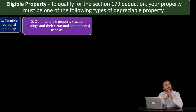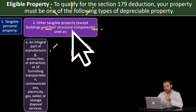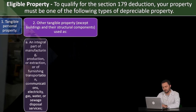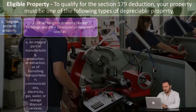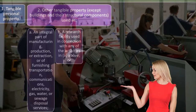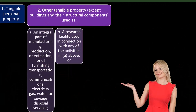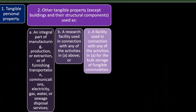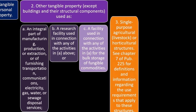Number two: other tangible property, except buildings and their structural components, used as: A) an integral part of manufacturing, production, or extraction, or of furnishing transportation, communications, electricity, gas, water, or sewage disposal services; B) a research facility used in connection with any of the activities in A above; or C) a facility used in connection with any of the activities in A for bulk storage of fungible commodities.